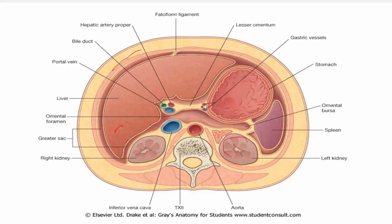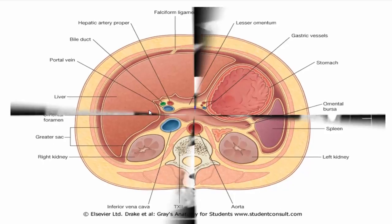This is the abdominal aorta, inferior vena cava, and this is the lesser omentum. This is the free border of the lesser omentum containing the hepatic artery, bile duct, and the portal vein.